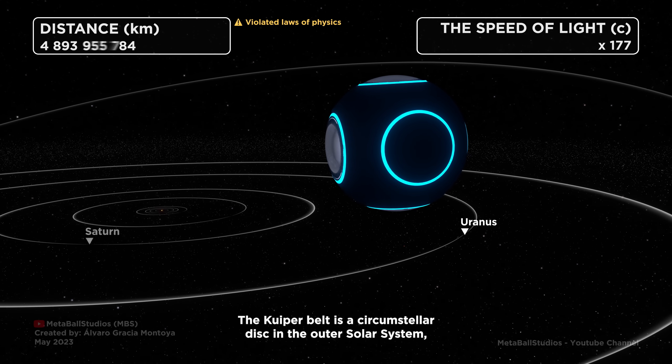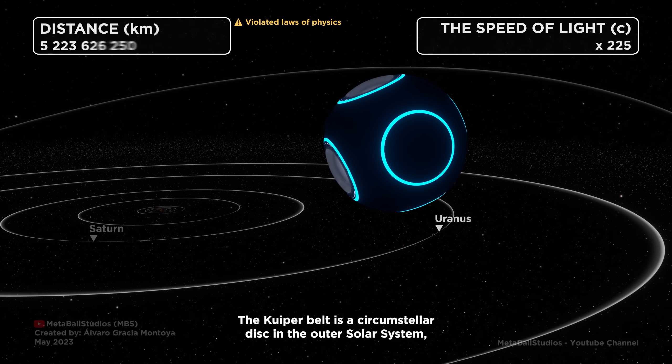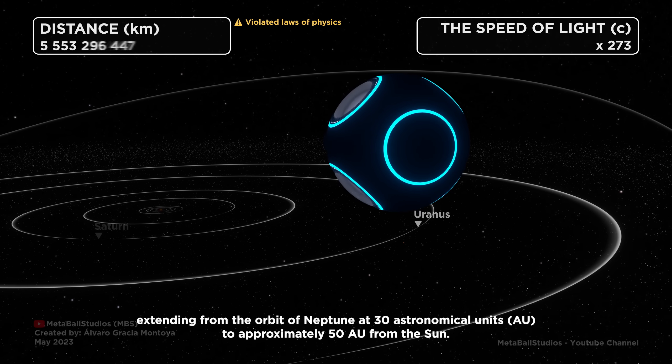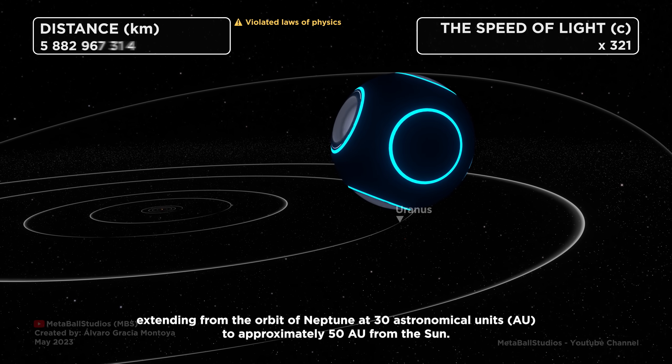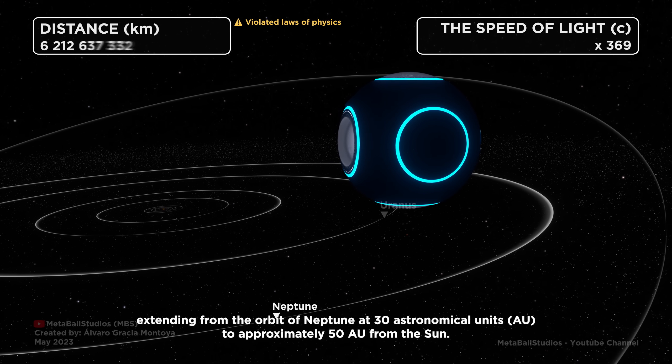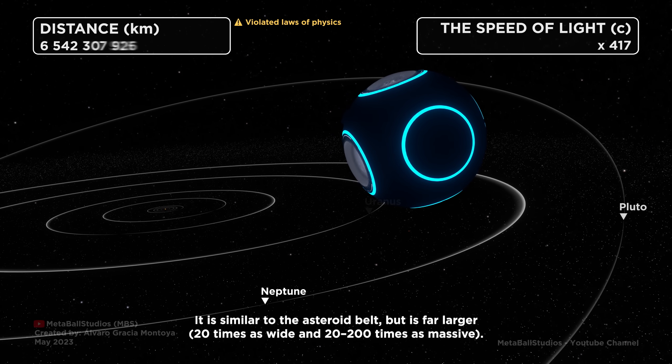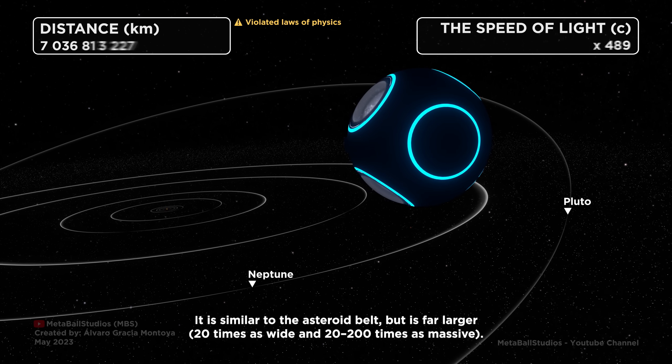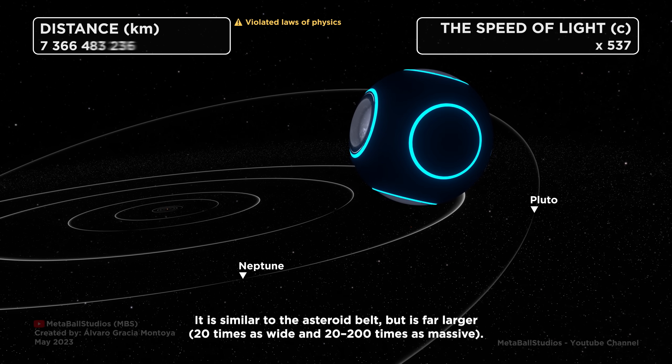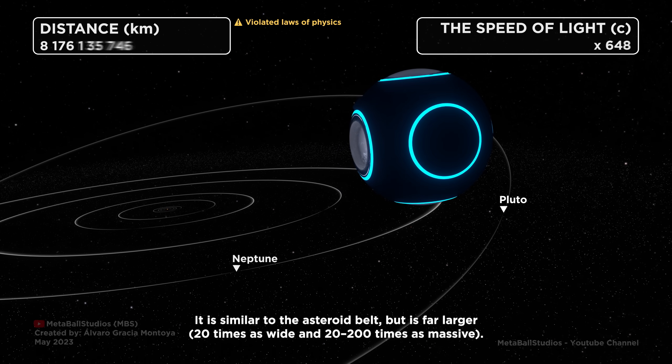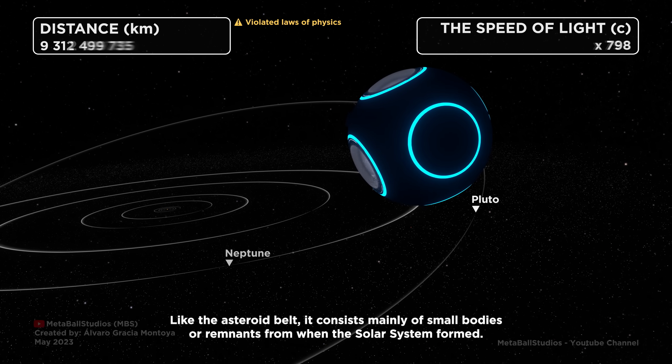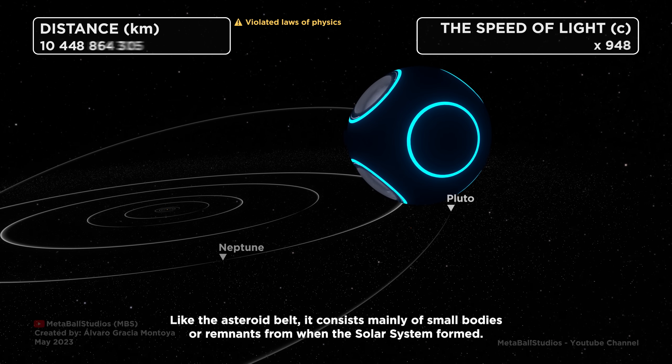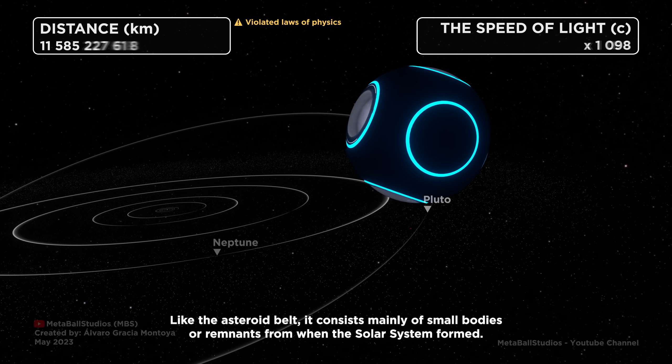The Kuiper Belt is a circumstellar disk in the outer solar system, extending from the orbit of Neptune at 30 astronomical units to approximately 50 from the Sun. It is similar to the asteroid belt, but is far larger, 20 times as wide and 20 to 200 times as massive. Like the asteroid belt, it consists mainly of small bodies or remnants from when the solar system formed.